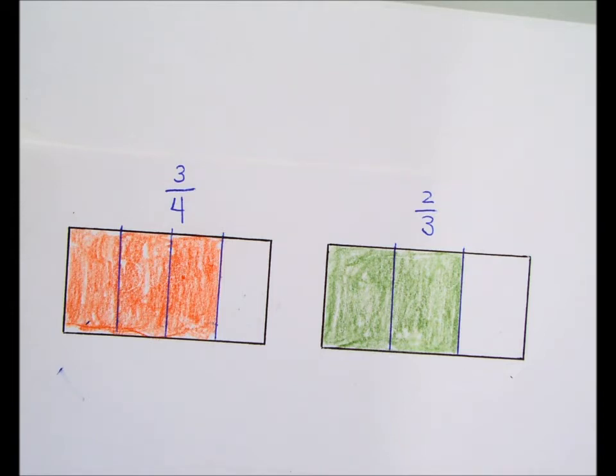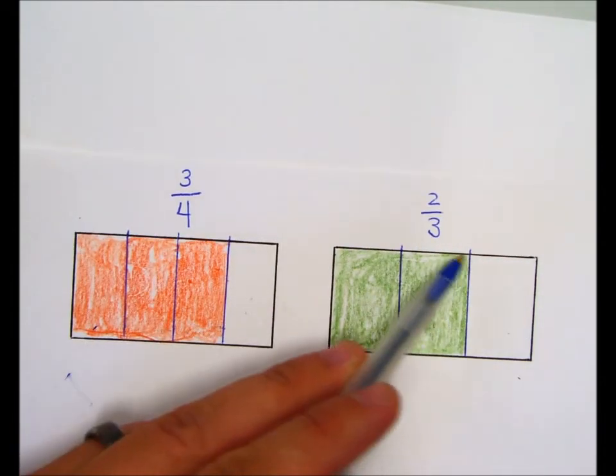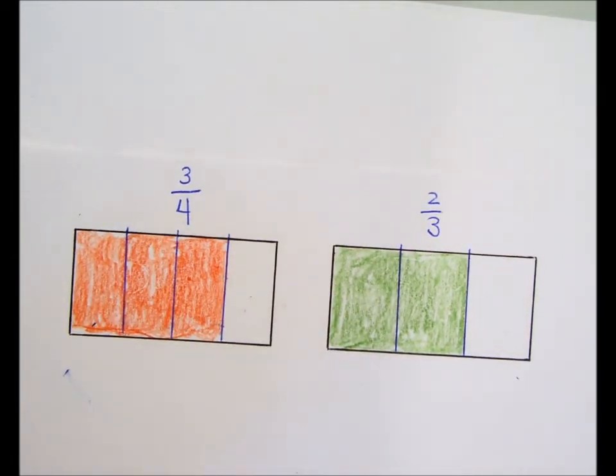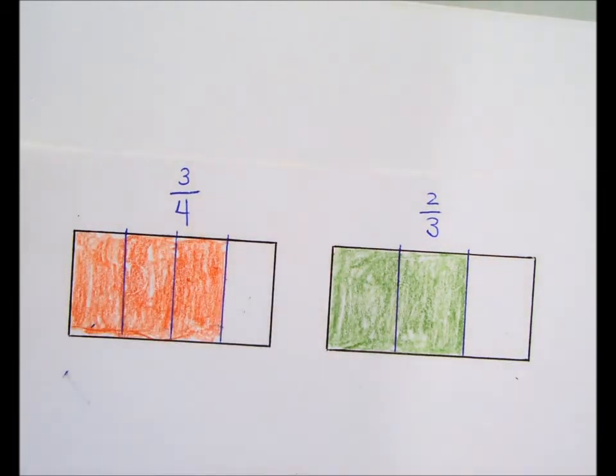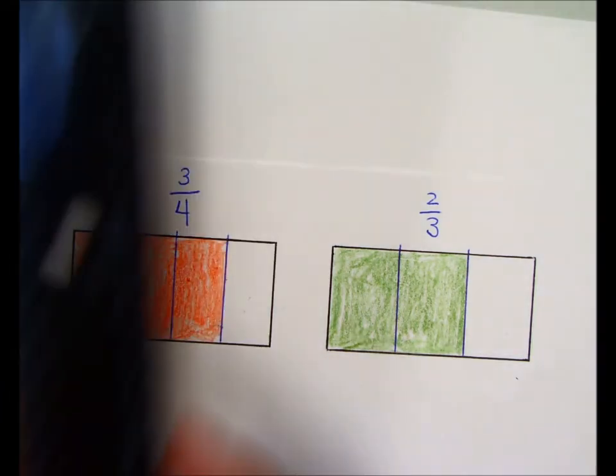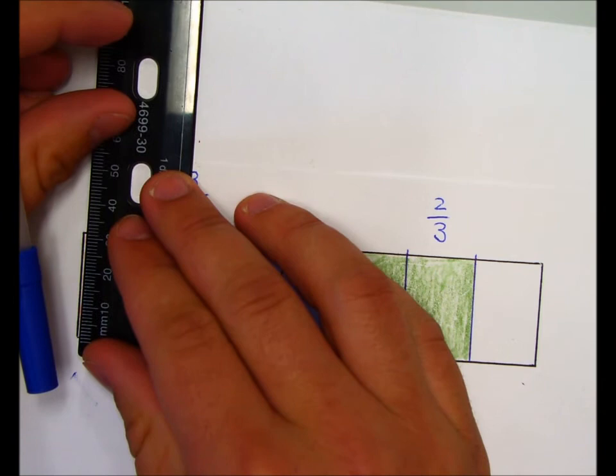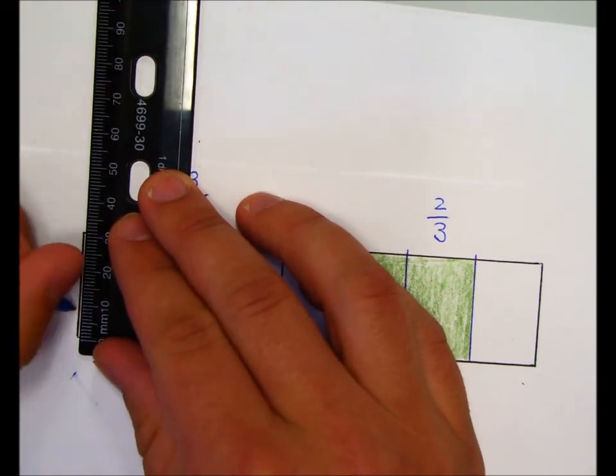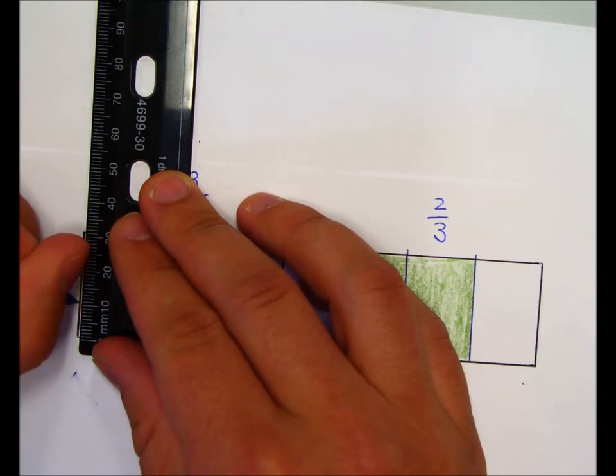So that's why we have to make it so we're comparing apples to apples instead of apples to oranges. So comparing fourths to thirds is like comparing apples to oranges. We need to compare them so that they have the same denominator and we're comparing apples to apples. So how can we do that? Well, if we further divide our rectangles, we can actually make these into what are called equivalent fractions.